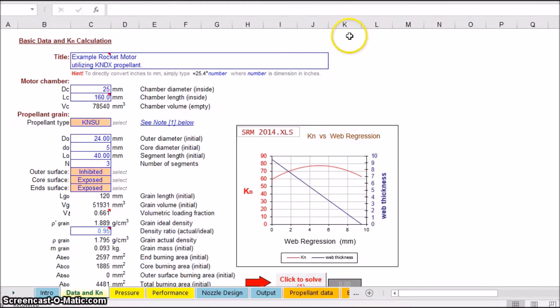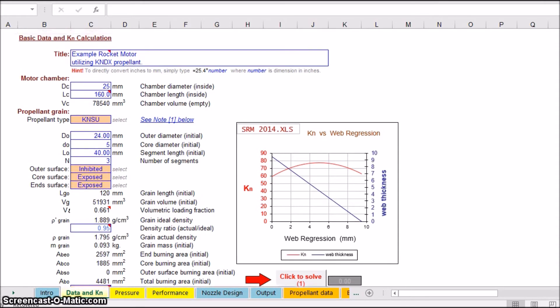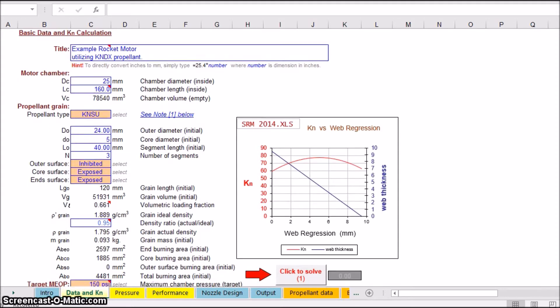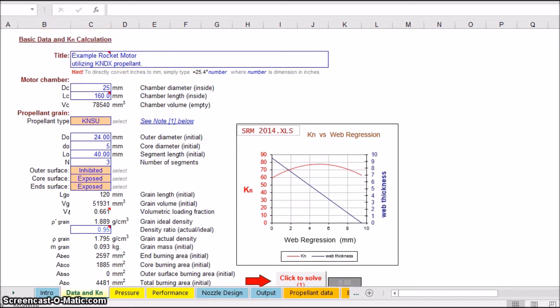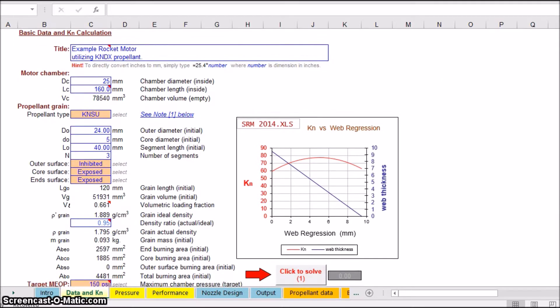Alright, so this is the software I used to design my model rocket engine. I just want to show you this real quick. This is how I estimated how the performance went. I didn't actually measure the actual output as far as the force of the rocket, so I don't know exactly what I got, but this is what I estimated here. So this is just where you plug in all your details, like motor chamber diameter, 25 millimeters.